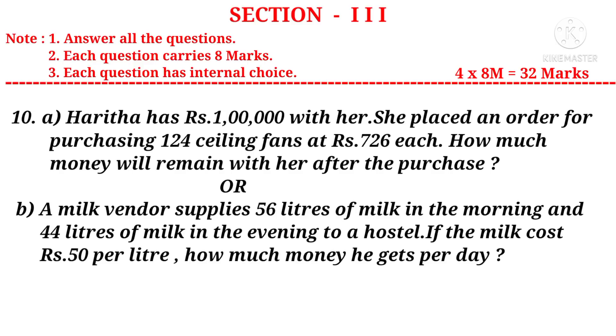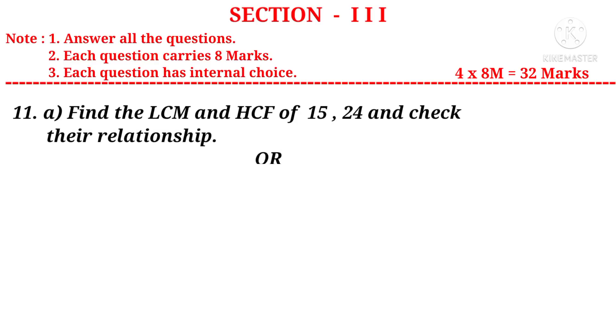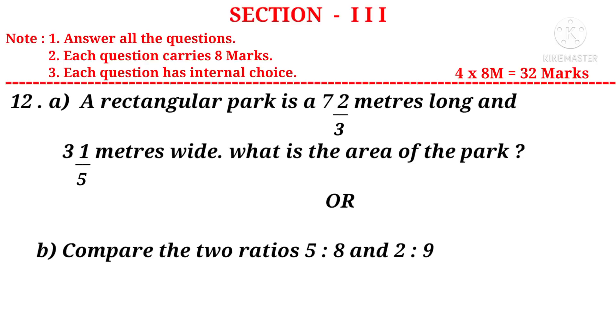Now 11a: Find the LCM and HCF of 15, 24 and check their relationship. Or b: Write a real-life situations for each of the following integers. A: Minus 200 meters. B: Plus 42 degrees centigrade. C: Rupees 4,800 crores. D: Minus 3.0 kilograms. Now let us take 12a: A rectangular park is 7 2/3 meters long and 3 1/5 meters wide. What is the area of the park? Or b: Compare the two ratios 5 is to 8 and 2 is to 9.